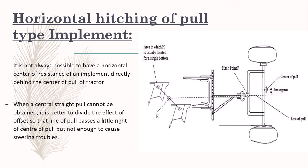As you can see on the right side, there is a diagram. From the top view of the rear side, this is the implement, this is the axle, and these are your rear tires. So the implement or attachment is hitched over this point. What it says is that when a central straight pull cannot be obtained, it is better to divide the effect of offset so that the line of pull passes a little to the right of center, but not enough to cause steering troubles. Sometimes the whole load is applied at the center of the axle, otherwise there will be difficulty in steering or balancing the tractor.